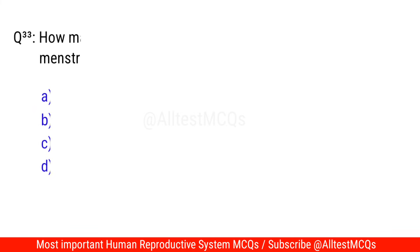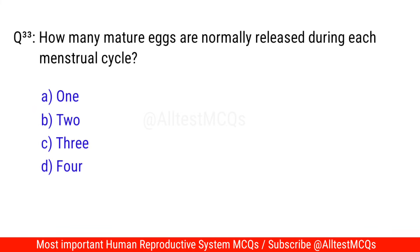Question No. 33: How many mature eggs are normally released during each menstrual cycle? The right option is A. One.